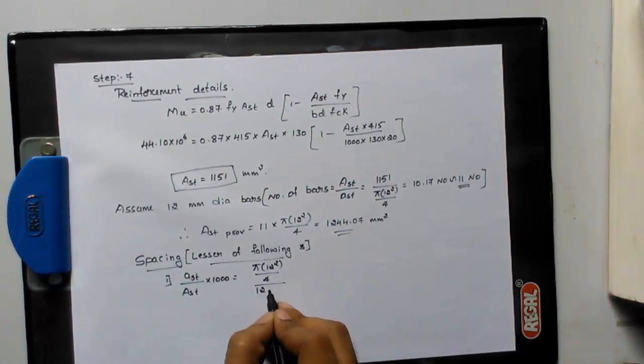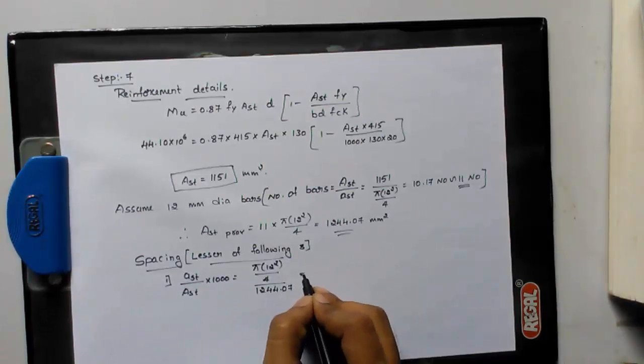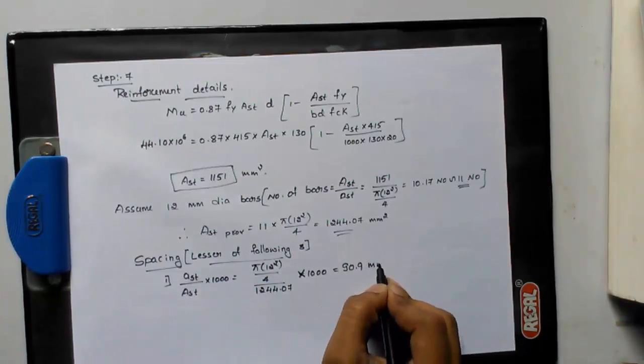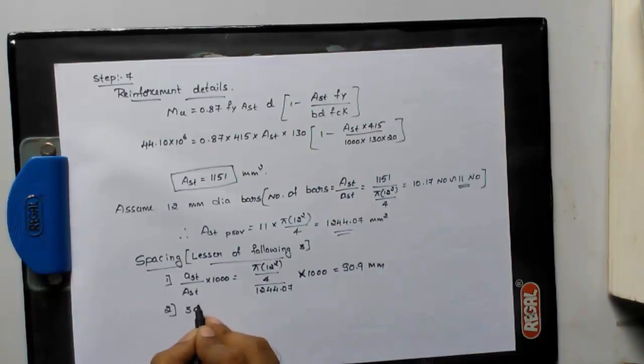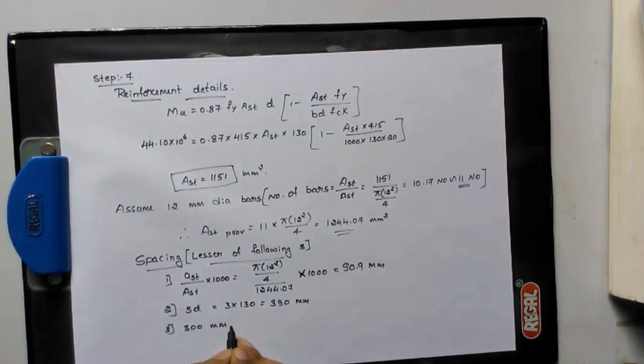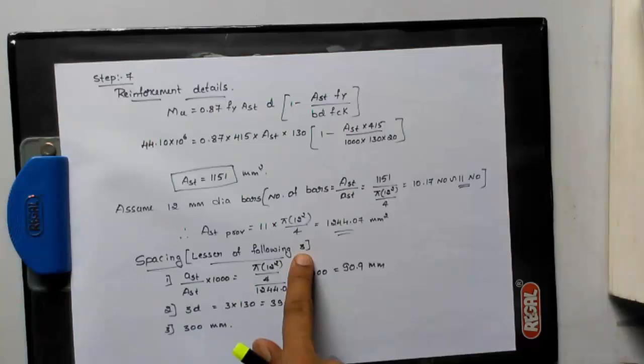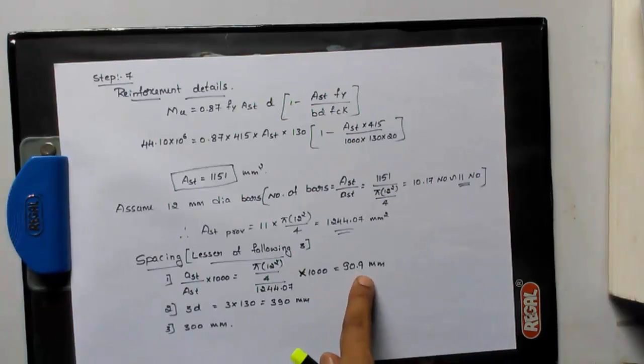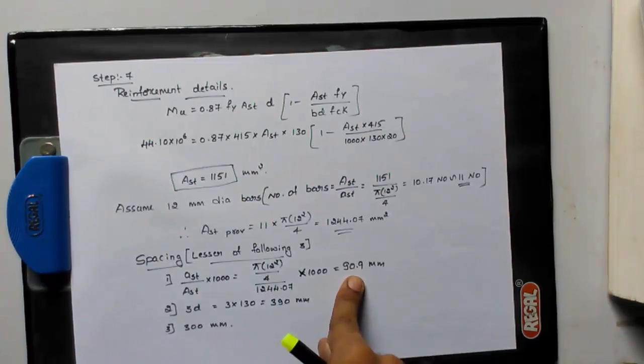You will get 90.9 mm. Second one is 3d, 3 into 130, you will get 390. Third step is 300 mm. Now when you need to provide lesser of following three, you got 90.9 mm, 390 mm, and 300 mm. Here the lesser one is 90.9 mm. This is not a round figure.